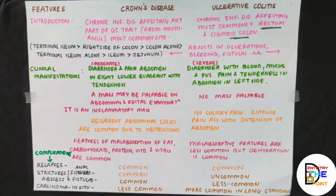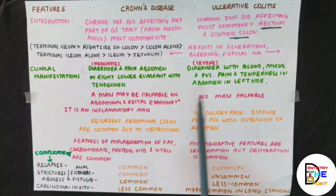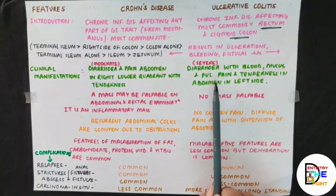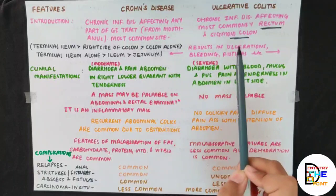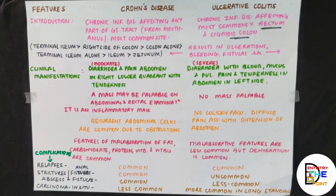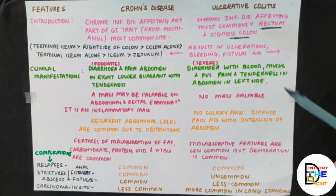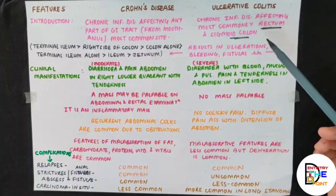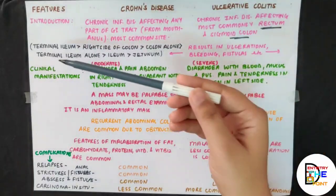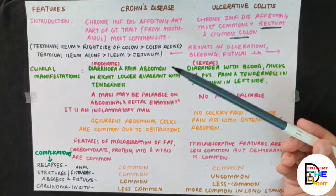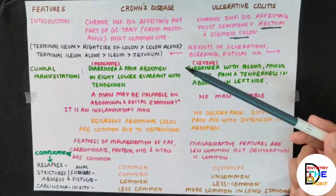Carcinoma in situ is less common in Crohn's disease, while there are more chances of developing carcinoma in long-standing ulcerative colitis. To summarize the distinctions: ulcerative colitis is a chronic inflammatory disorder of the rectum and sigmoid colon resulting in ulcerations and bleeding, while Crohn's disease is a chronic inflammatory disorder of the terminal ileum or right side of the colon — or any part — resulting in ulcerations, strictures, fistulas, and abscess formation.